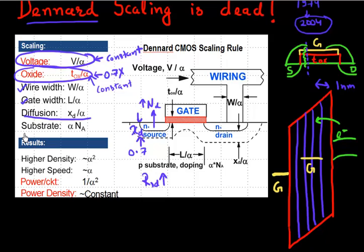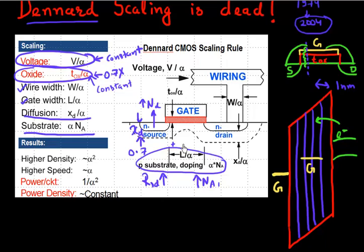Another thing Mr. Dennard required was to increase the substrate doping continuously. That became very difficult as well, because if you keep increasing the number of doping atoms in your channel region, your carrier mobility actually takes a hit. There is also a phenomenon known as random doping fluctuations that started to come into play if we continued along the path Mr. Dennard required.